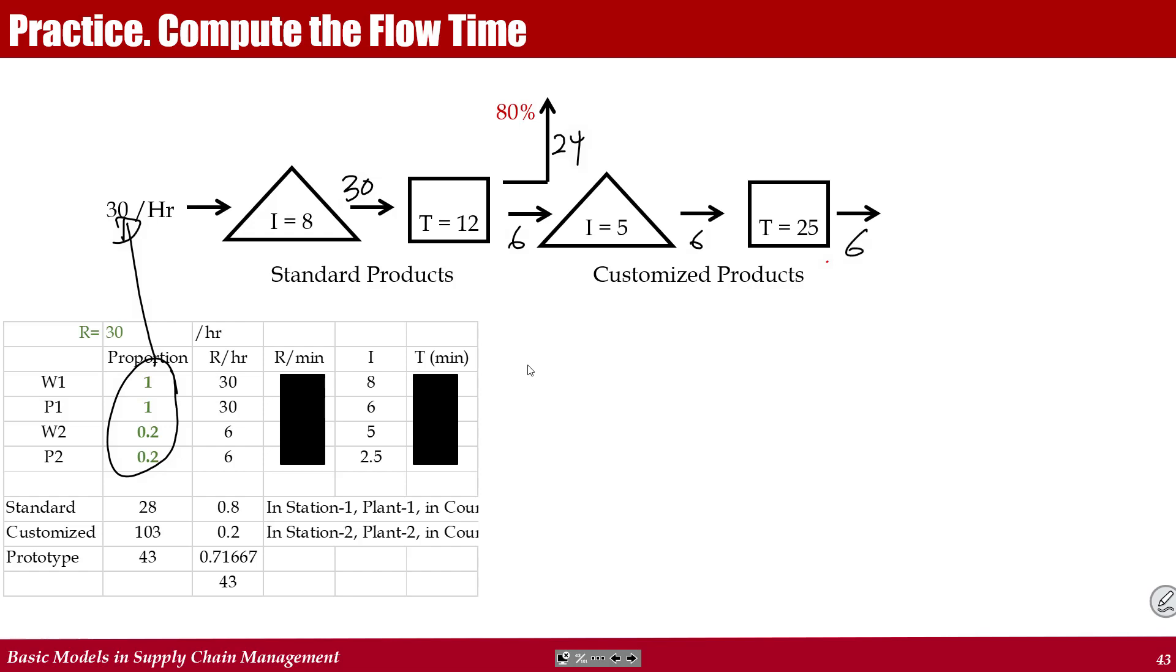What comes in is 30. And what goes out is 24 from here and 6 from here. It is still 30. The system that we are talking about is a stable system. Input is equal to output is equal to throughput. 30 per hour, throughput per minute. Just divide them by 60. And these are throughputs per minute.